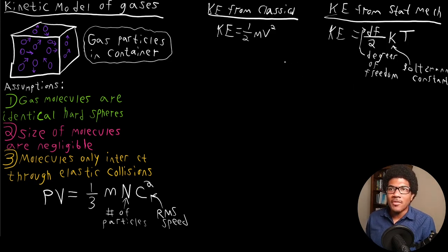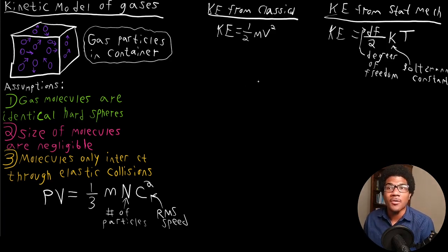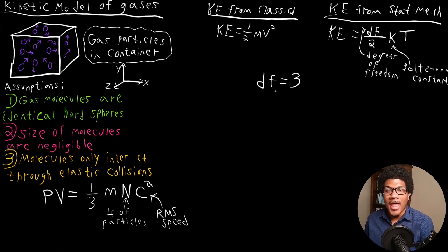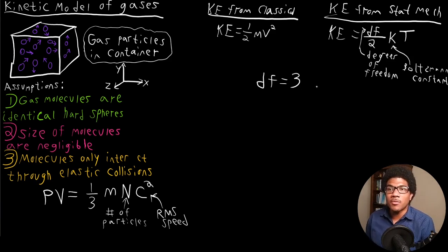For an ideal monatomic gas — think helium or argon, composed of a single atom — the degrees of freedom equal three. That comes from your three axes of translational motion: particles moving in the X, Y, or Z direction. If we had a more complicated molecule, we would have rotational or vibrational degrees of freedom, but for a monatomic gas we just have these three translational degrees of freedom.